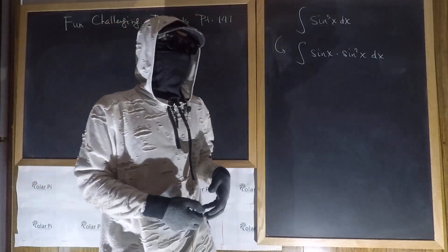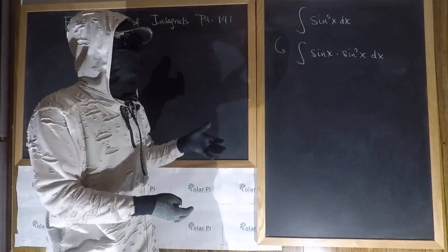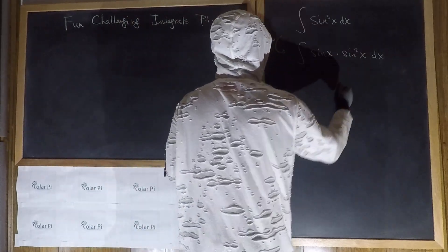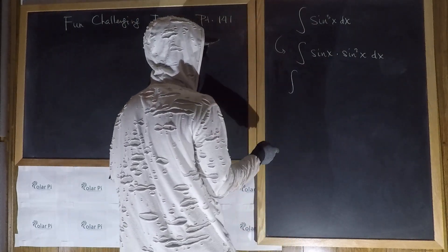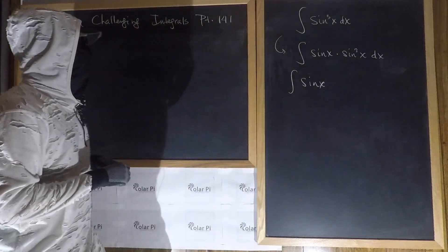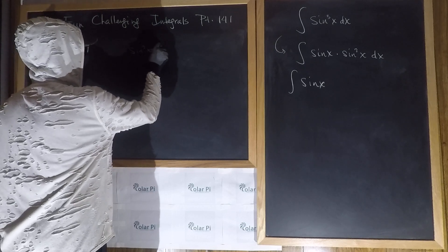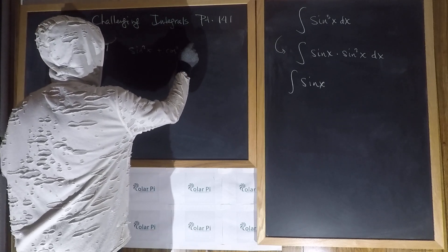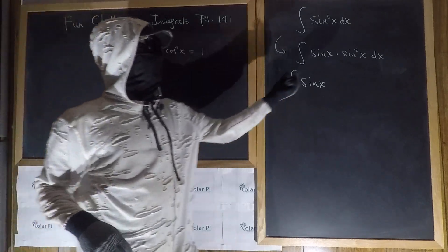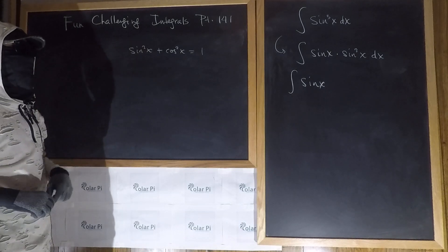For example, sine squared plus cosine squared is equal to one. You can use that to substitute the squared part. From the Pythagorean identity — sine squared x plus cosine squared x equals one — it follows that sine squared x is equal to one minus cosine squared x.